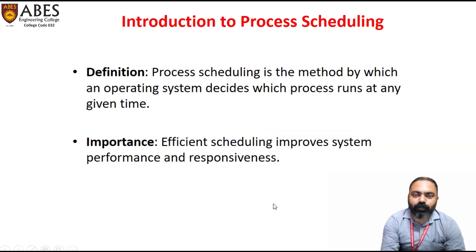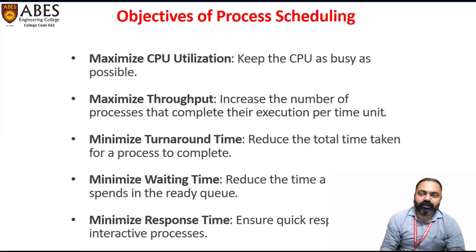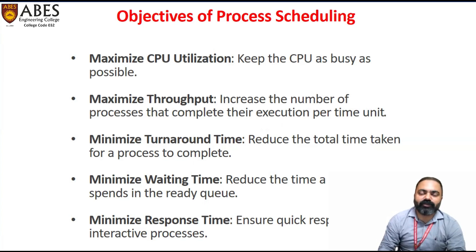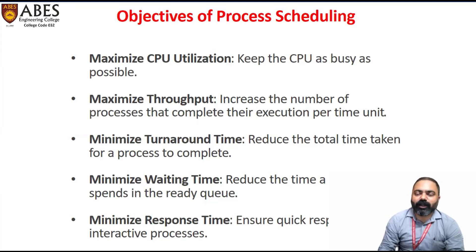What is the importance of process scheduling? Efficient scheduling improves system performance and responsiveness. Key objectives include maximizing CPU utilization — scheduling algorithms should maximize CPU use so that the CPU does not sit idle — and maximizing throughput, meaning the number of processes executed by the CPU in a given time period.